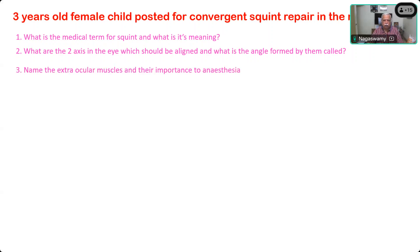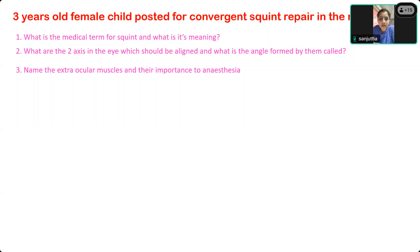Name the extraocular muscles and their importance to anesthesia. The extraocular muscles are inferior rectus, superior rectus, lateral and medial rectus, and two obliques - superior and inferior obliques. They are associated with the oculocardiac reflex.